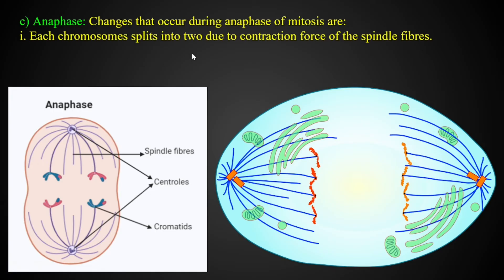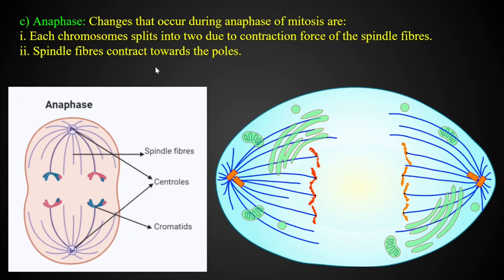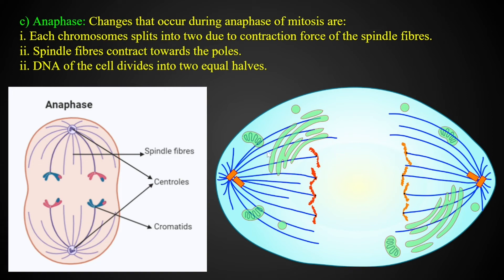The chromosome splits into two due to the contraction force of the spindle fibers. The spindle fibers contract towards the poles, pulling chromatids apart. DNA of the cell divides into two equal halves, and chromosomes are pulled equally to each pole.